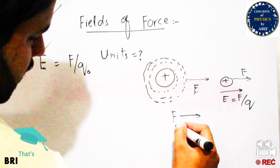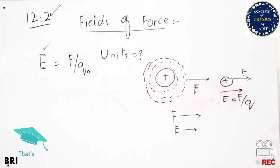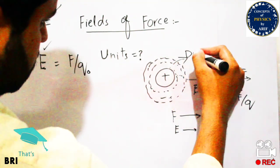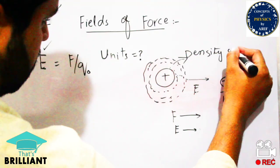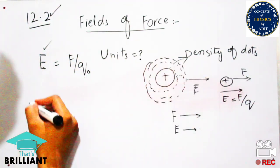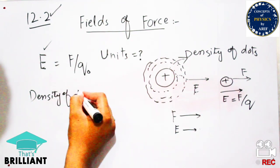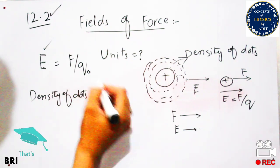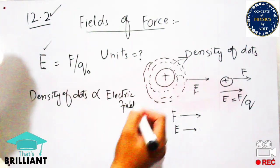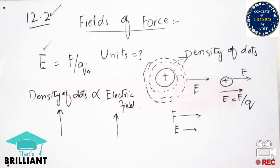If we come closer to the positive source charge, the density increases. The direction of the electric field is the same as the direction of force — these two directions are similar. The density of the dots shows the electric field: density is directly proportional to the electric field. If the density of arrows is very high, the electric field will also be high.